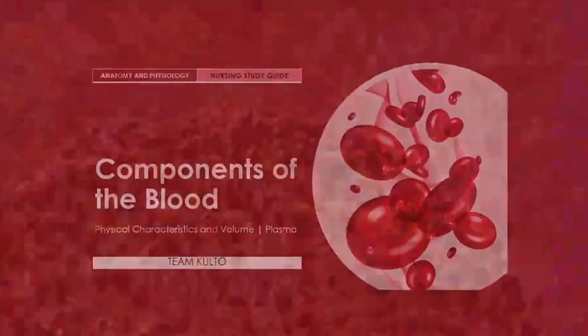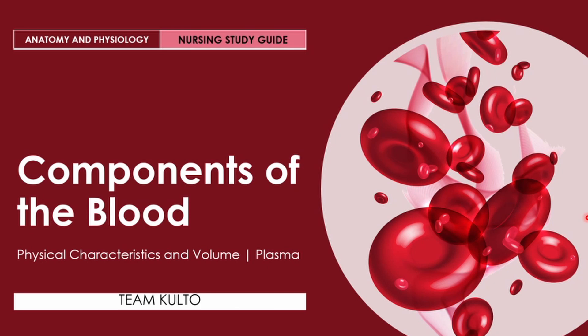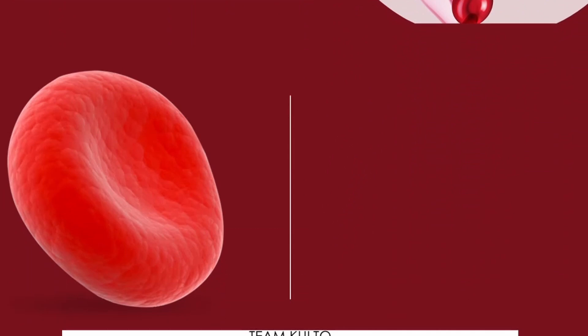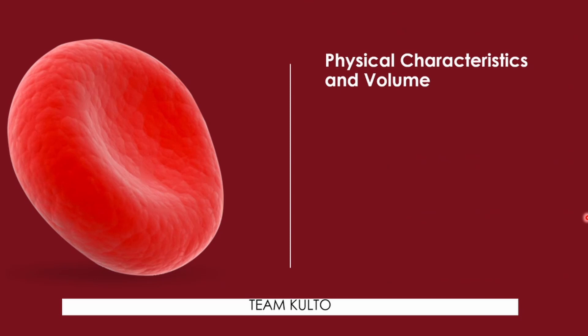Next, components of blood. In the following slides we're going to talk about the physical characteristics and volume, including your plasma. Essentially, blood is a complex connective tissue in which living blood cells — the formed elements — are suspended.